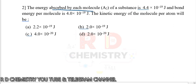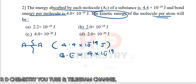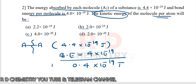Question number 2. The energy absorbed by each molecule of A₂ — a single molecule — is 4.4 × 10⁻¹⁹ joules. The bond dissociation energy required to break the bond is 4 × 10⁻¹⁹ joules. We will deduct these two numbers: 4.4 − 4.0 = 0.4 × 10⁻¹⁹ joules remains. This remaining energy is converted to kinetic energy after the bond breaks, giving two A atoms.